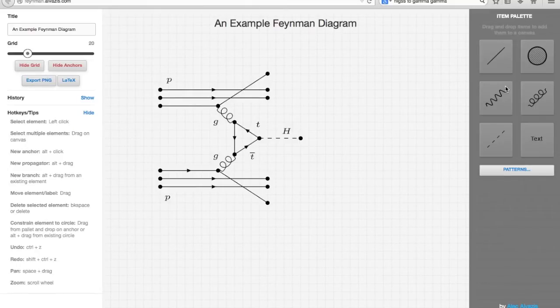The user interface is broken up into three sections: a toolbar on the left, the canvas in the middle, and a sidebar on the right.